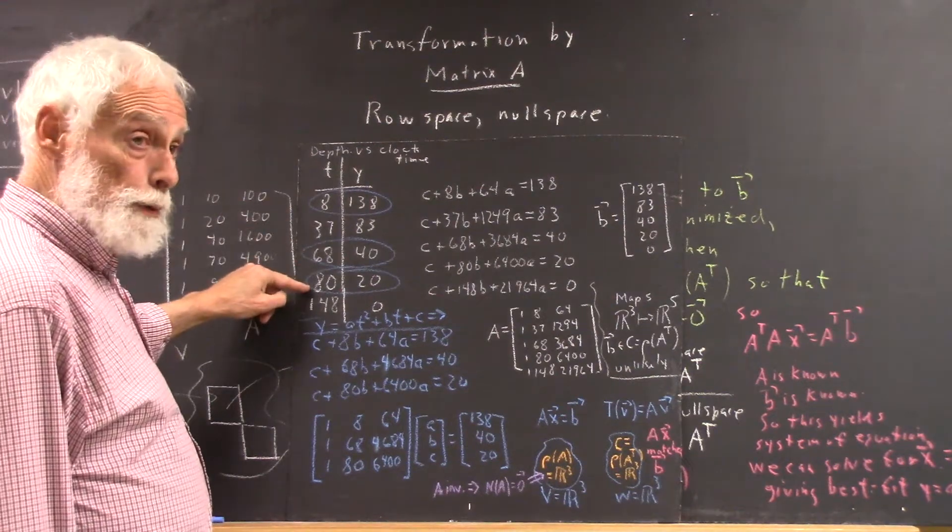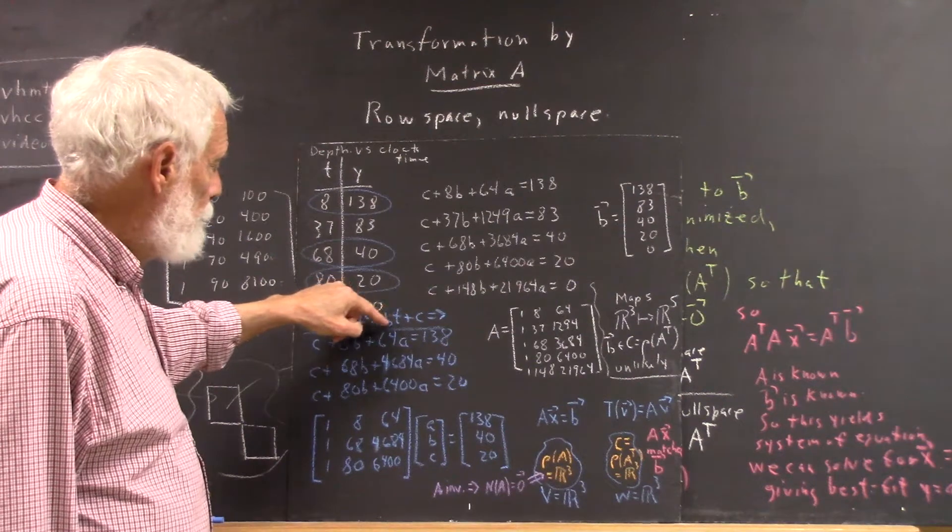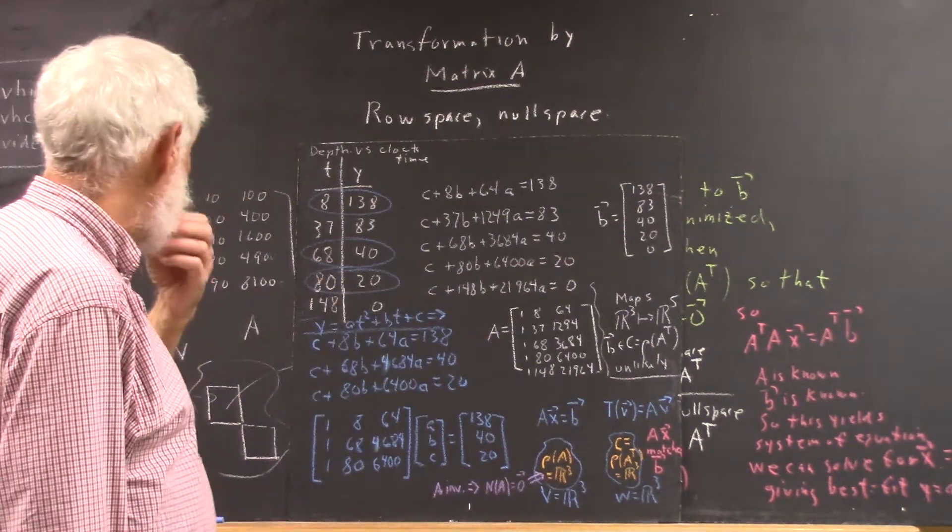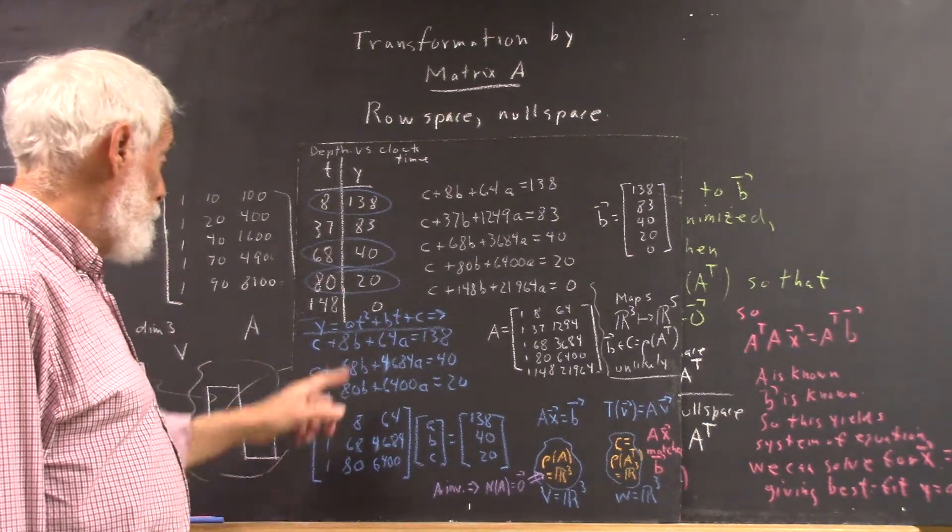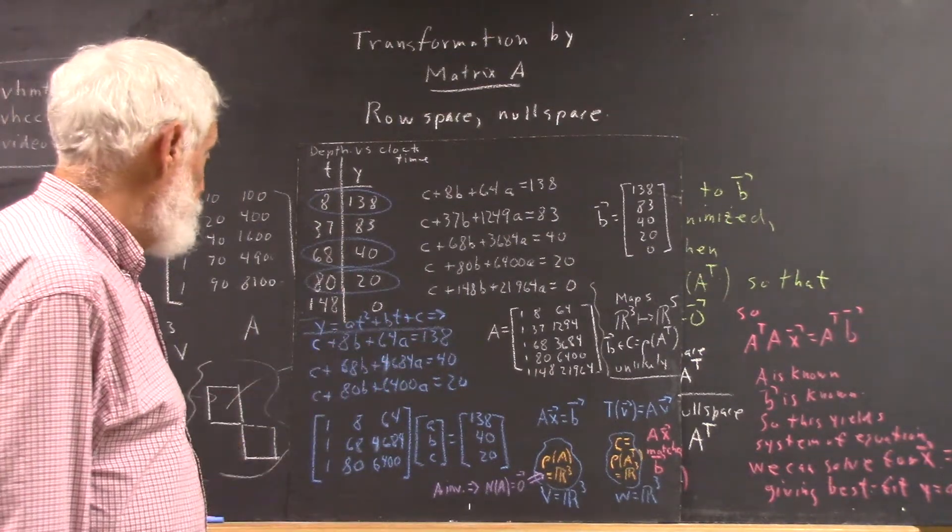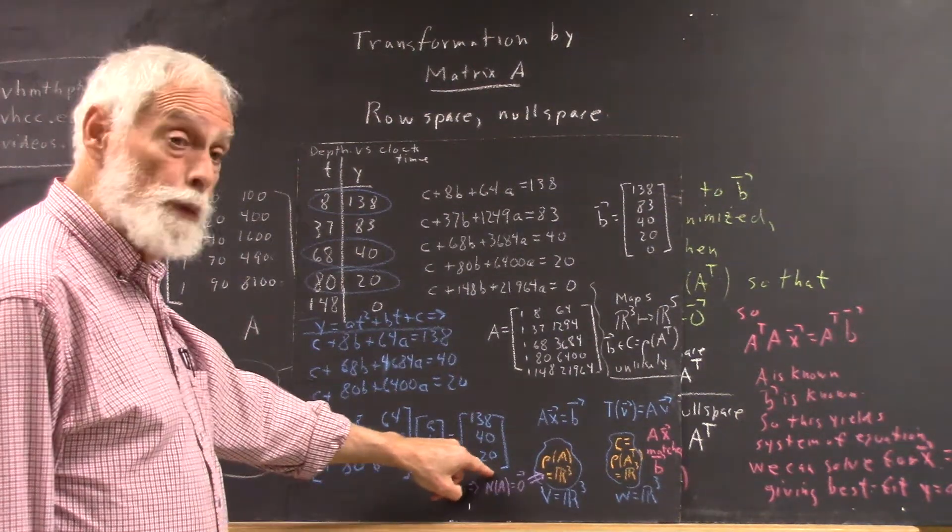We selected three data points and plugged them into the form y = at² + bt + c to get three simultaneous equations in the parameters a, b, and c. These three equations gave us this matrix equation.